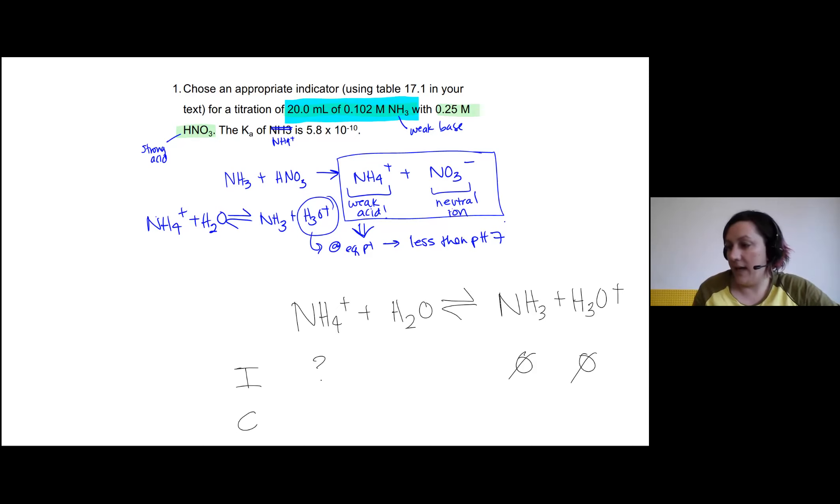So to do that, I'm going to take my 0.0200 liters of my NH3, multiply it by my 0.102 moles per liter. And that's going to give me a value of 0.00204 moles of NH3 that was added.